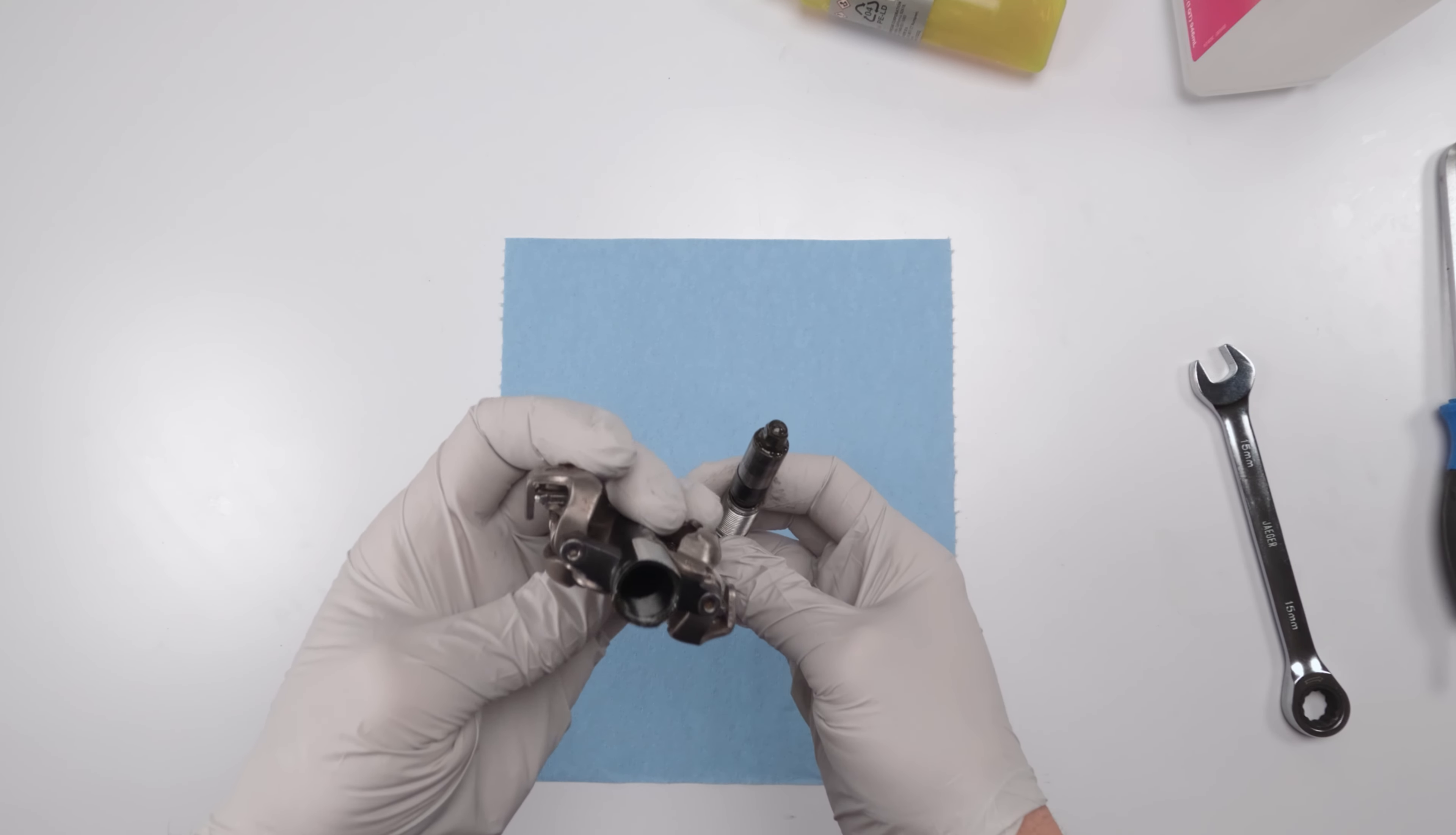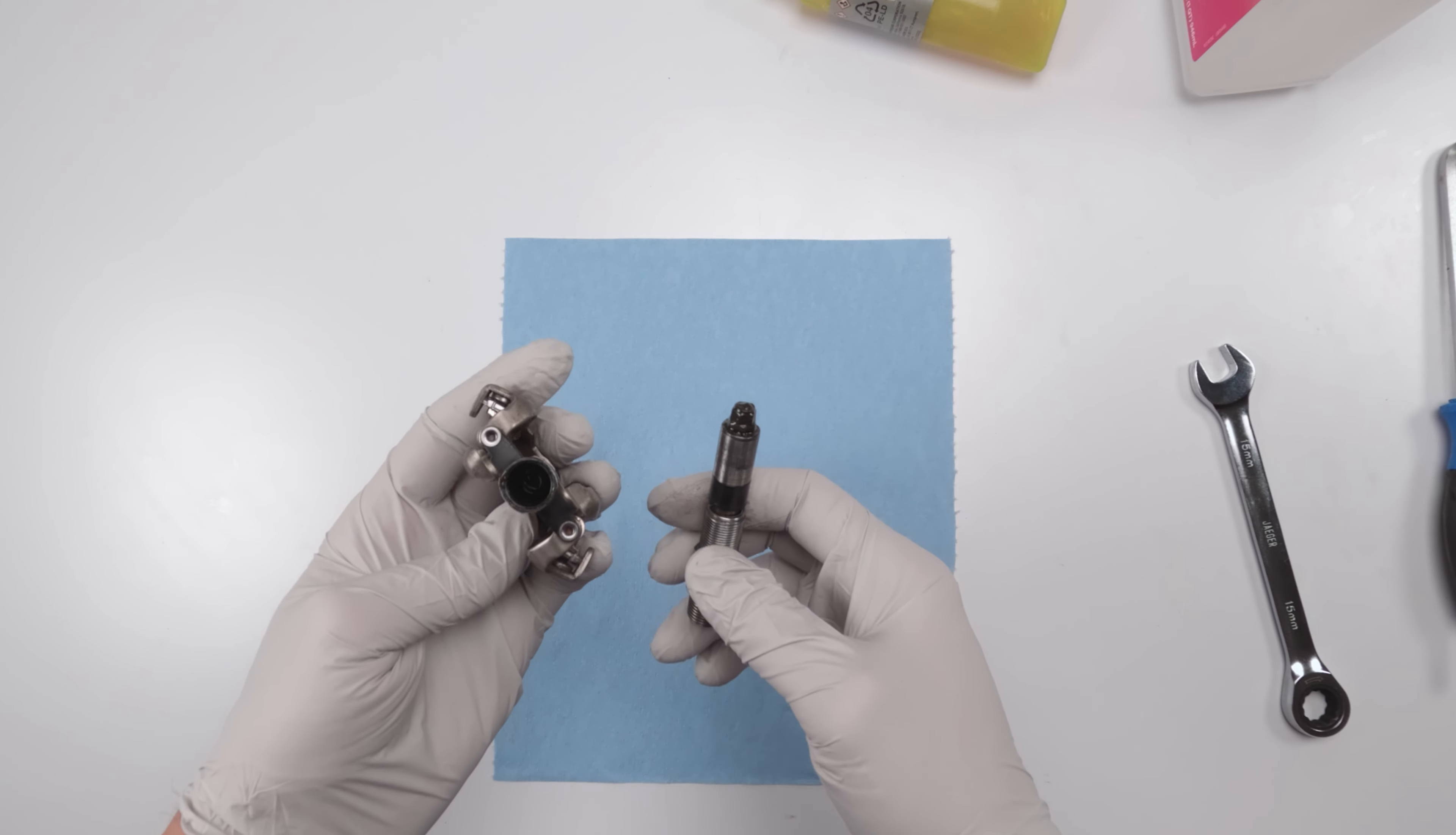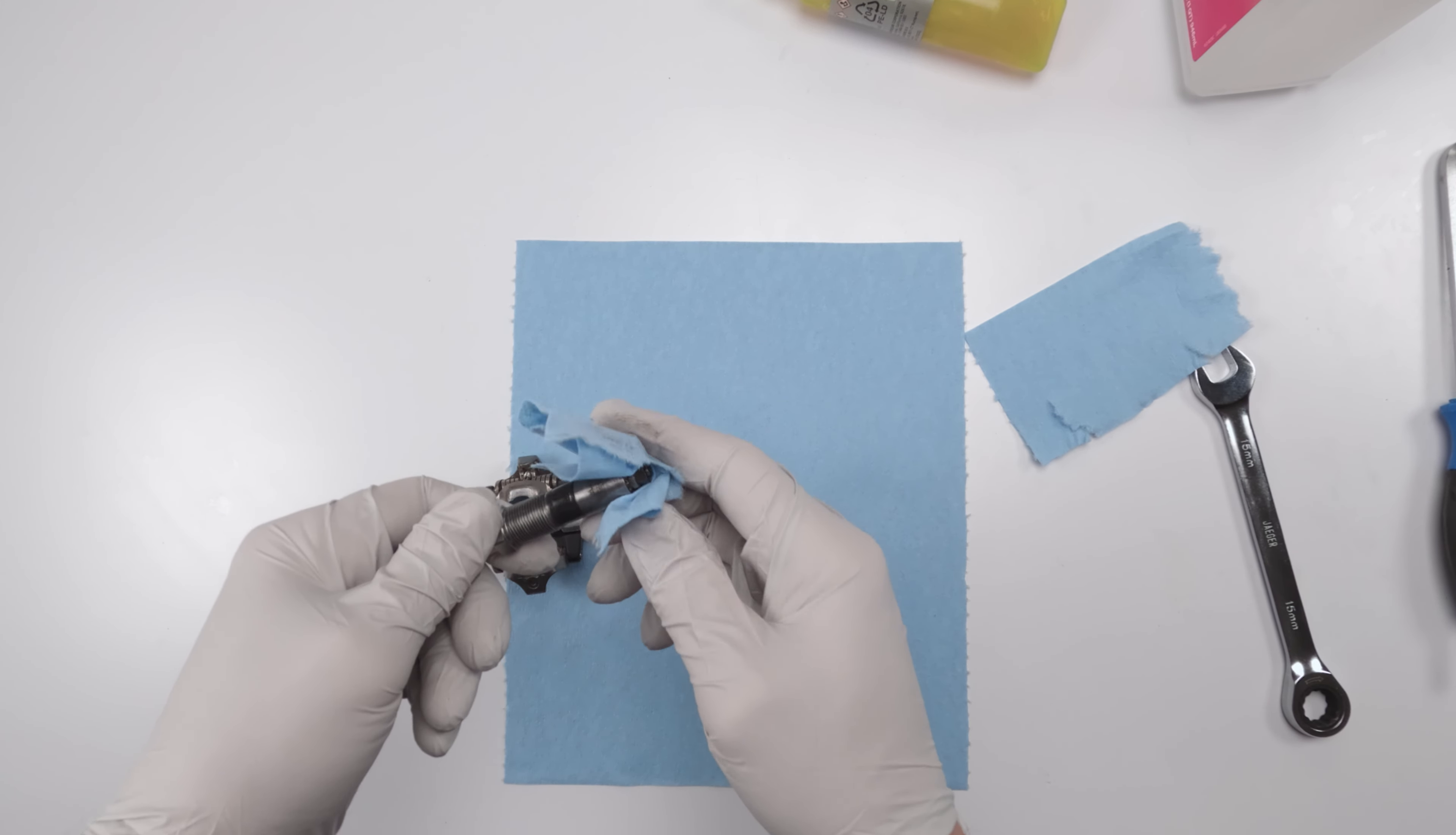To say the least, that's a pretty dark-colored grease there. So, I'm positive it hasn't been serviced in a while. Next, we will clean out all the grease. For that, you're going to need some paper towel. And we're going to try and get rid of all that old grease.